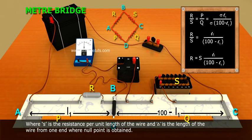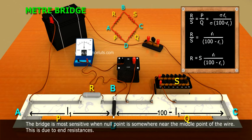The bridge is most sensitive when null point is somewhere near the middle of the wire, the middle point of the wire. This is due to end resistances.